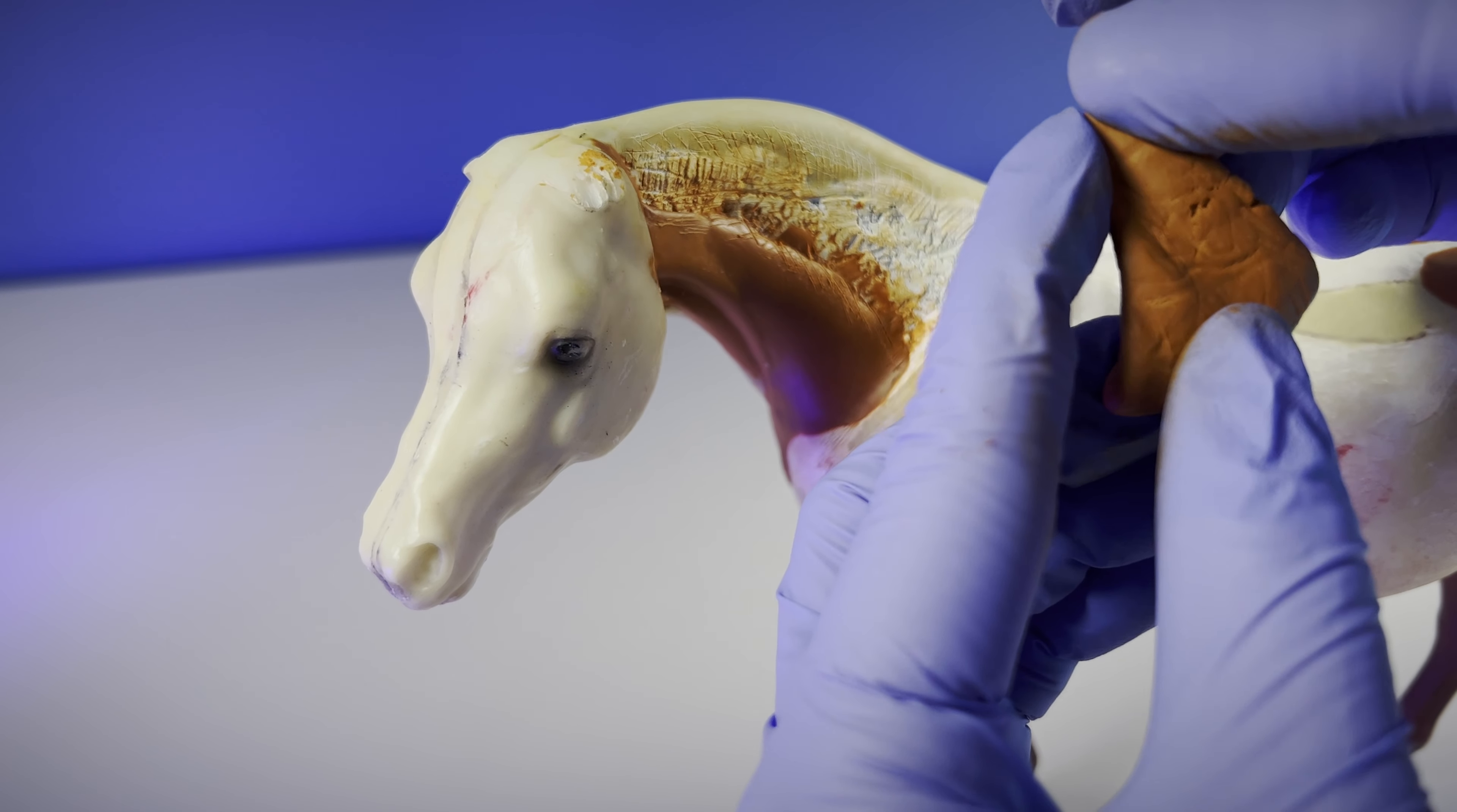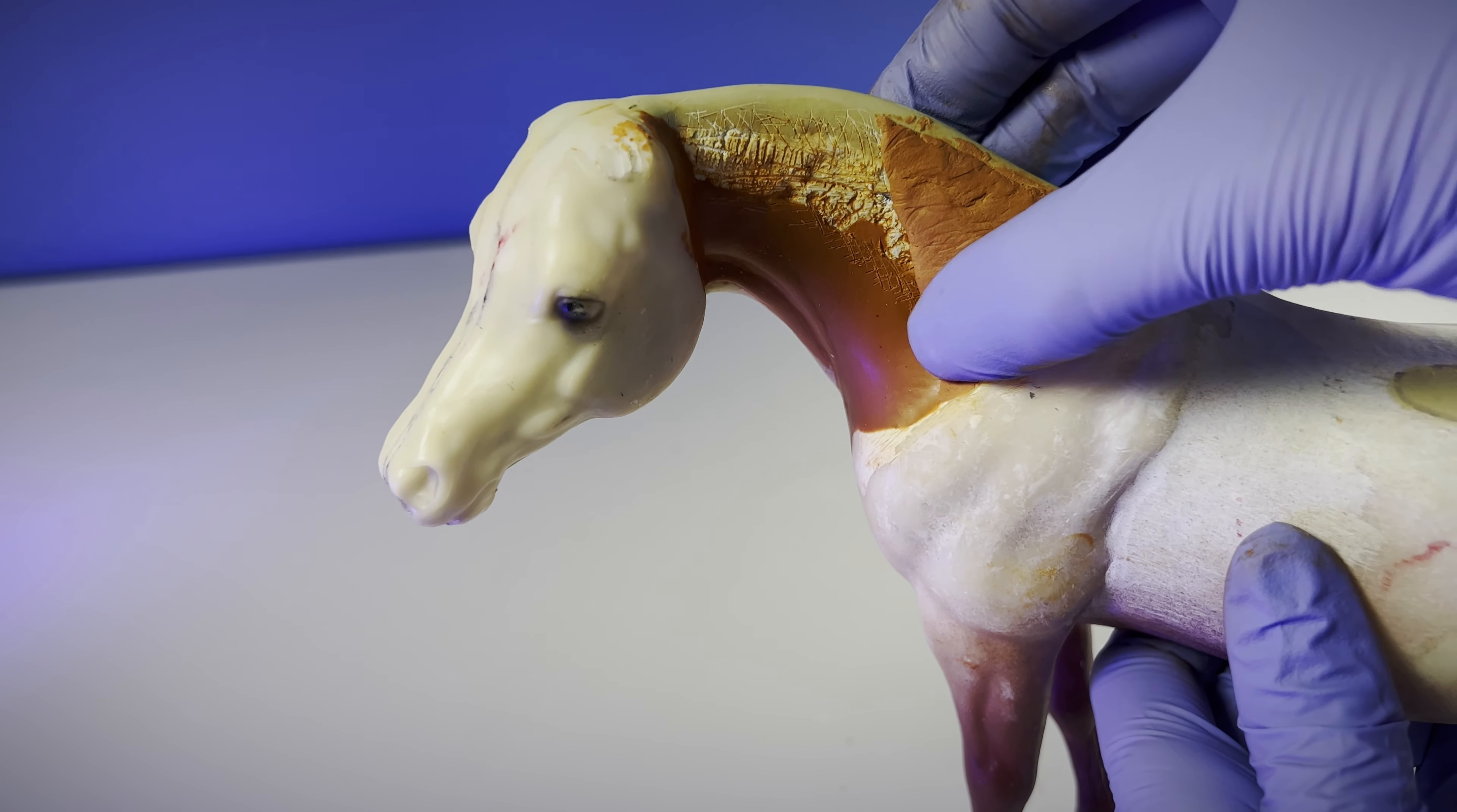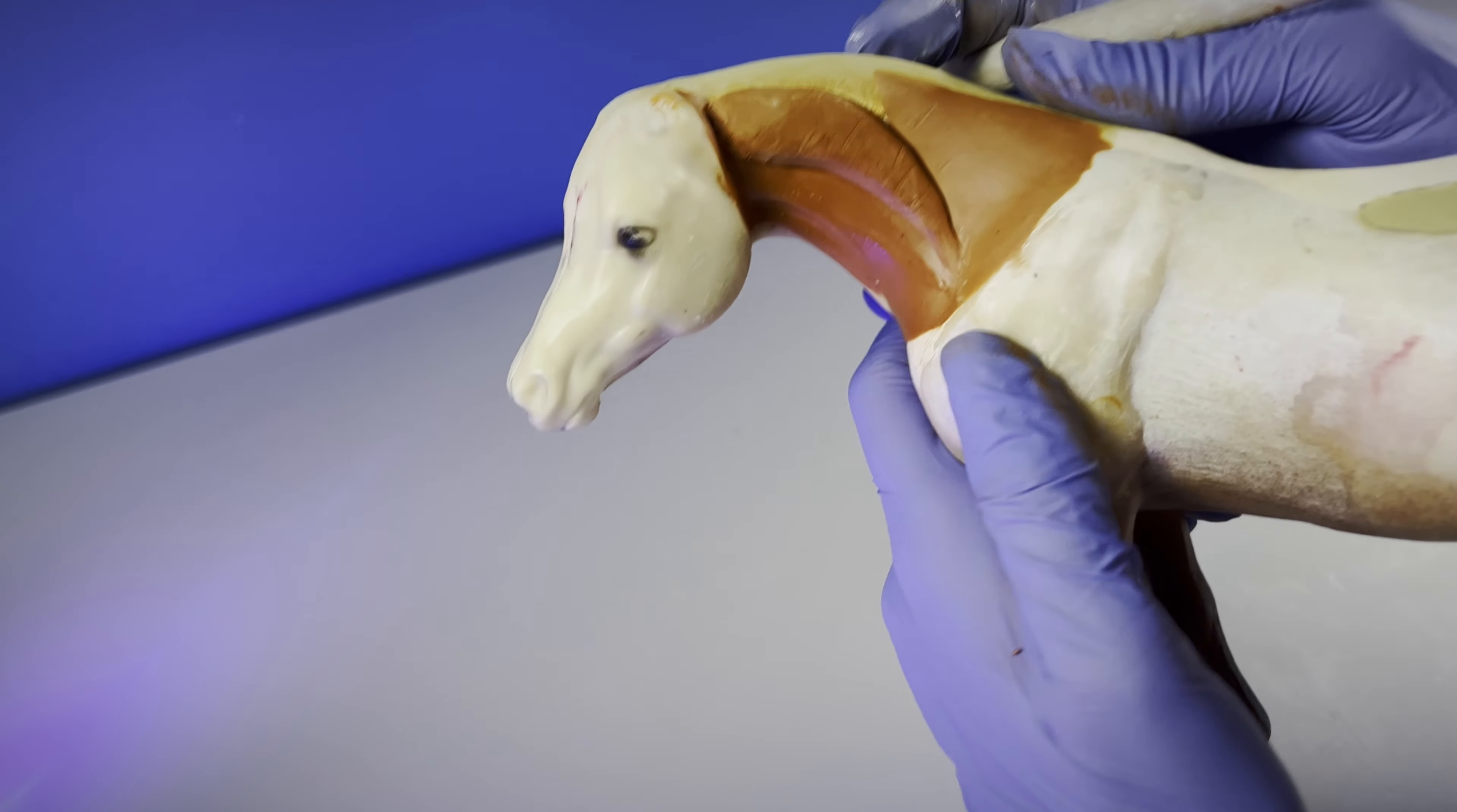I found terracotta is the firmest of all the Milliput colors. Firm being relative. It's not nearly as firm as Neatatite or Greenstuff or Aves epoxy putty in the natural color, which are all pretty firm.